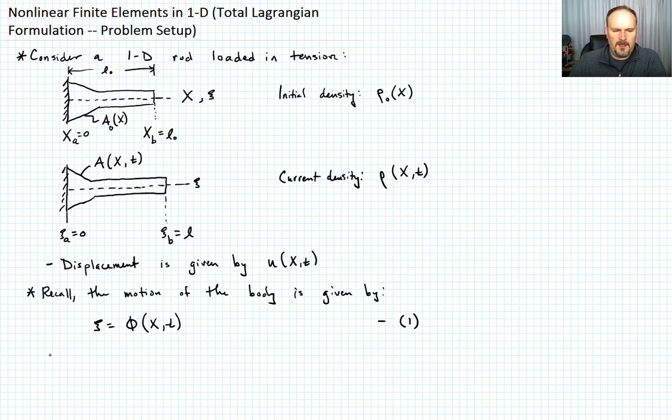And then kind of the corollary to that, the material point is defined as their location, their position in space in the initial time t equals 0 configuration. So we would say something like X is equal to φ of X and 0. It's the initial position. Call that equation 2.